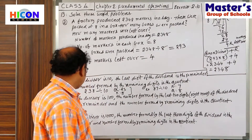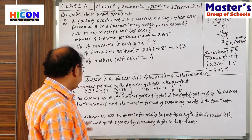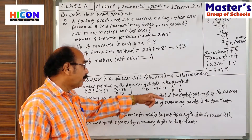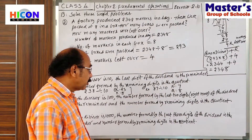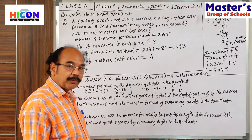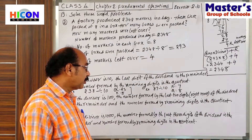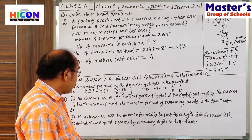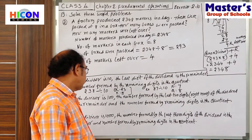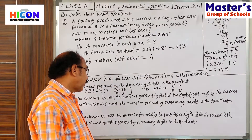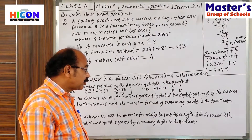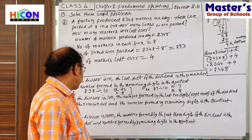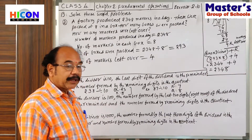Okay, now come to this point. If the divisor is 100, the number formed by the last 2 digits — rightmost — that's why from the right side, not left side. If the divisor is 100, the number formed by the last 2 rightmost digits of the dividend is the remainder.